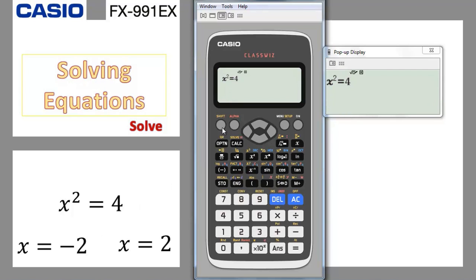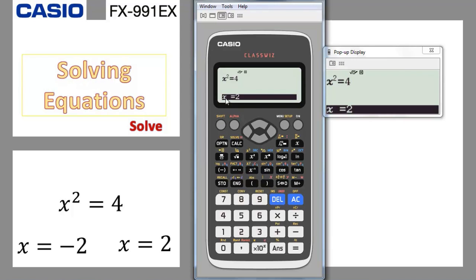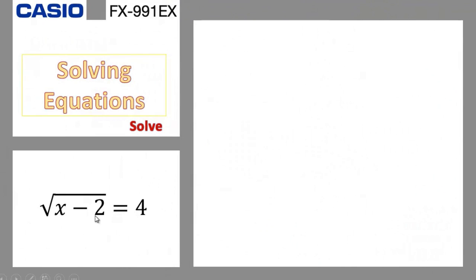Let's go back and do shift solve again — shift calc — and try another number which is big on the positive side, press equal, and it gives you the right solution. So remember: when you solve an equation and you know in advance it's going to give you two solutions, do both trials. Try a number in negative — like minus 10 or minus 50 — and try one in the positive, to check if there is another solution, because sometimes the equation provides two solutions.